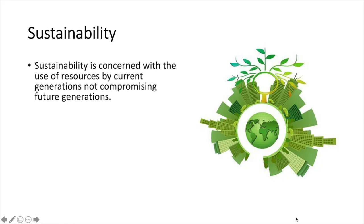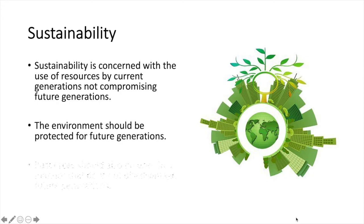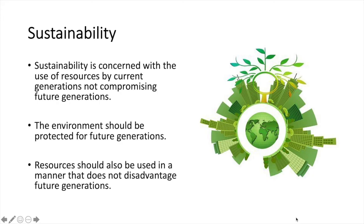Sustainability is concerned with the use of resources by current generations not compromising future generations. The environment should be protected for future generations, and resources should be used in a manner that does not disadvantage them. For example, a country should not exhaust all of its resources in becoming wealthy immediately. In doing so, they could harm the ability of future generations to benefit from these resources. Also, if by exhausting all resources the environment is irreversibly damaged, then it can harm the quality of life for future generations as well.